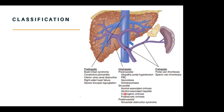The pre-sinusoidal causes will be idiopathic portal hypertension, primary biliary cholangitis, sarcoidosis, and schistosomiasis. We do see a number of patients with schistosomiasis who present with pre-sinusoidal portal hypertension. The sinusoidal causes include intrinsic liver disease, especially alcoholic-associated liver disease, cryptogenic cirrhosis, and post-necrotic cirrhosis. In terms of post-sinusoidal, very rarely we have a syndrome called sinusoidal obstruction syndrome.